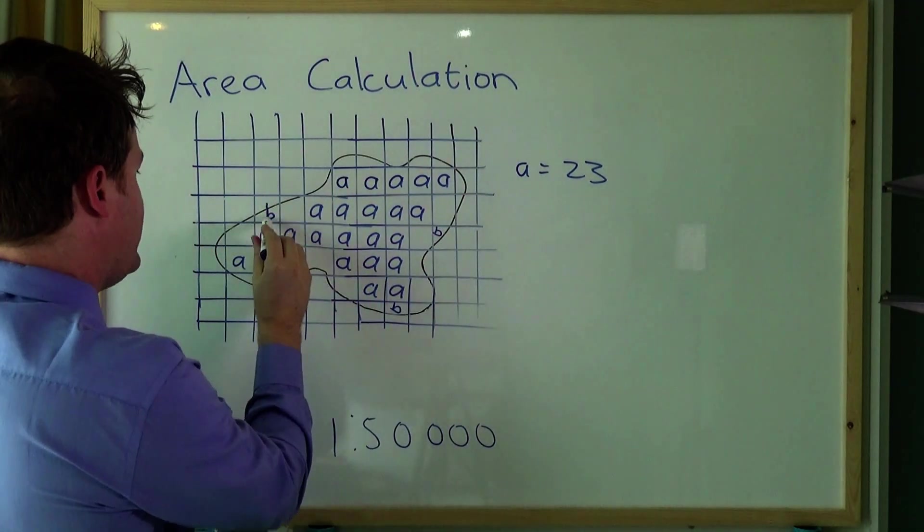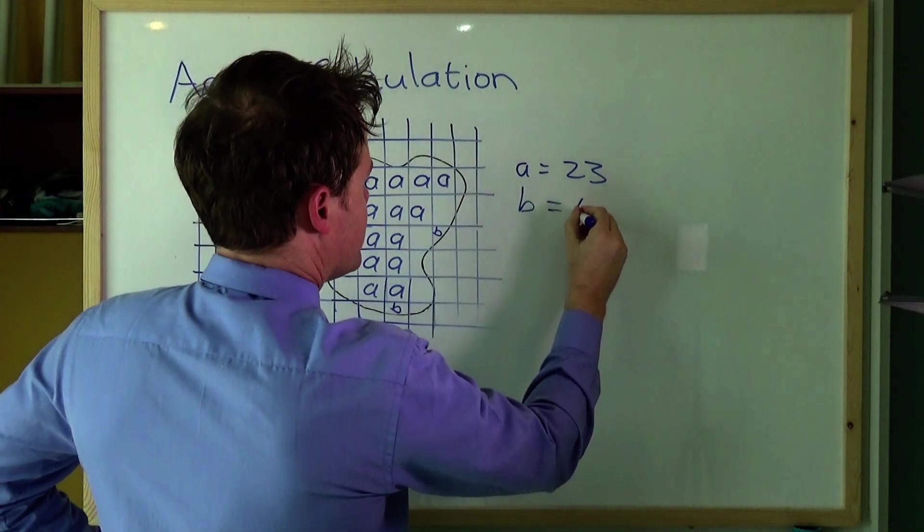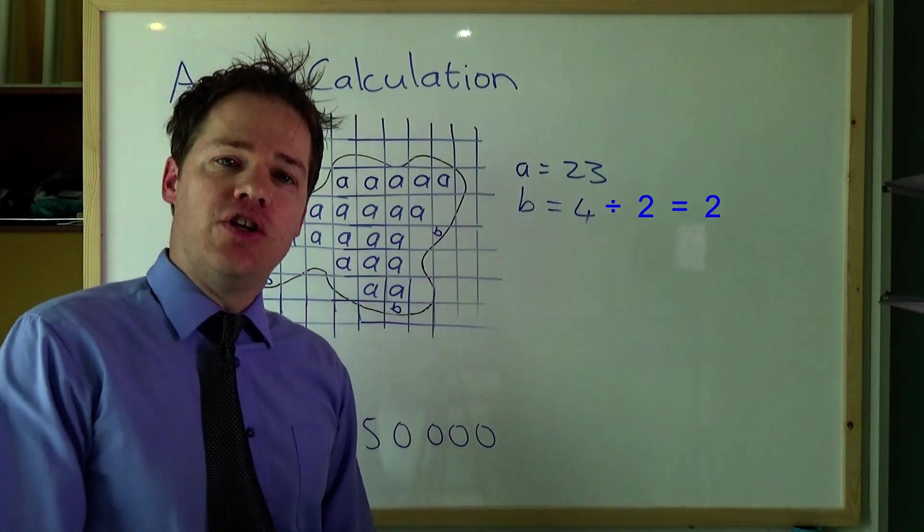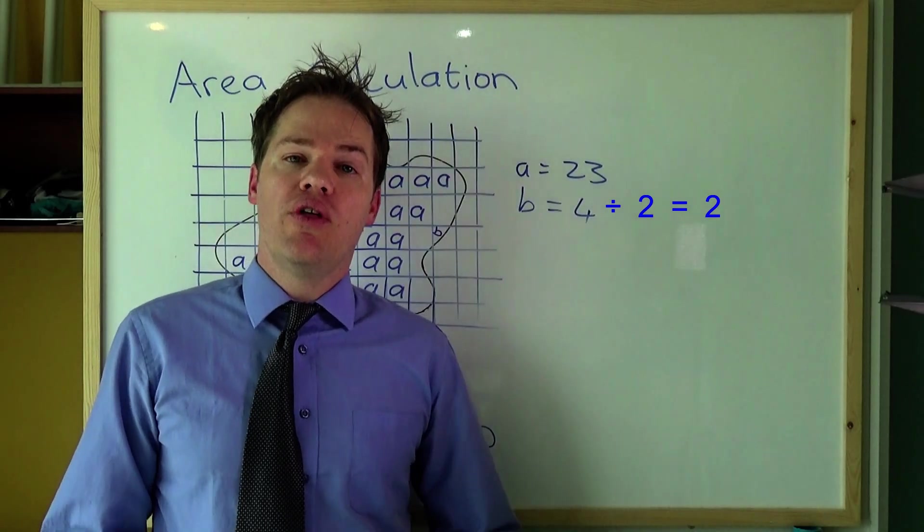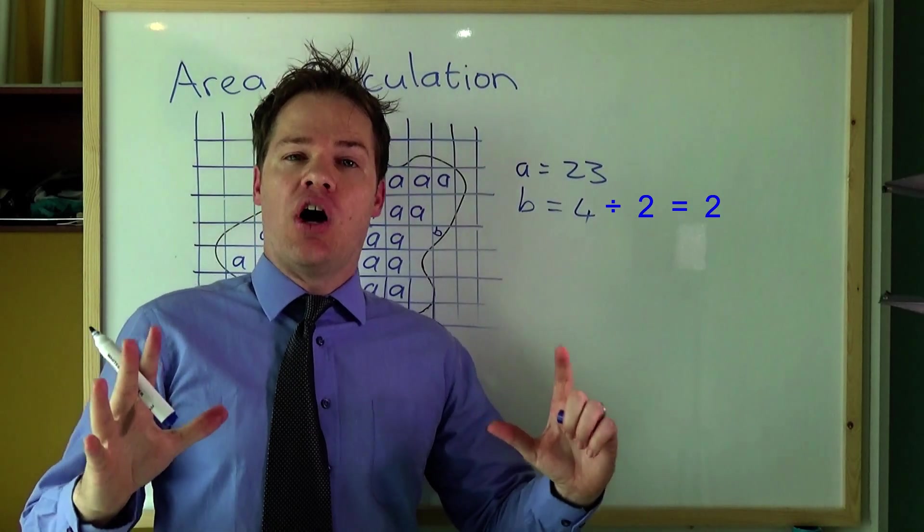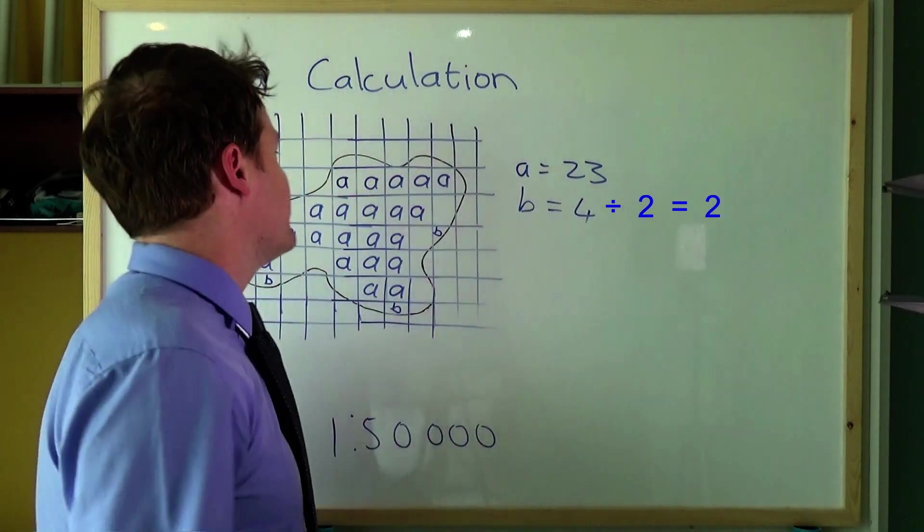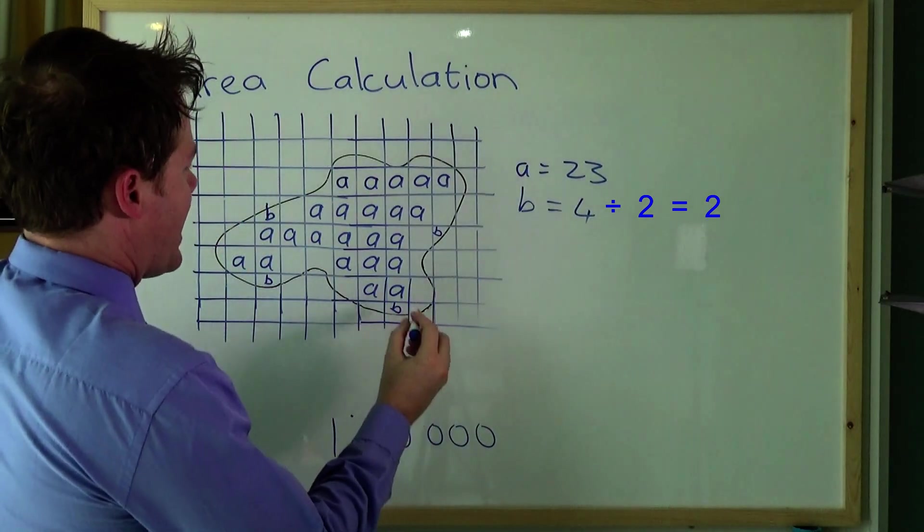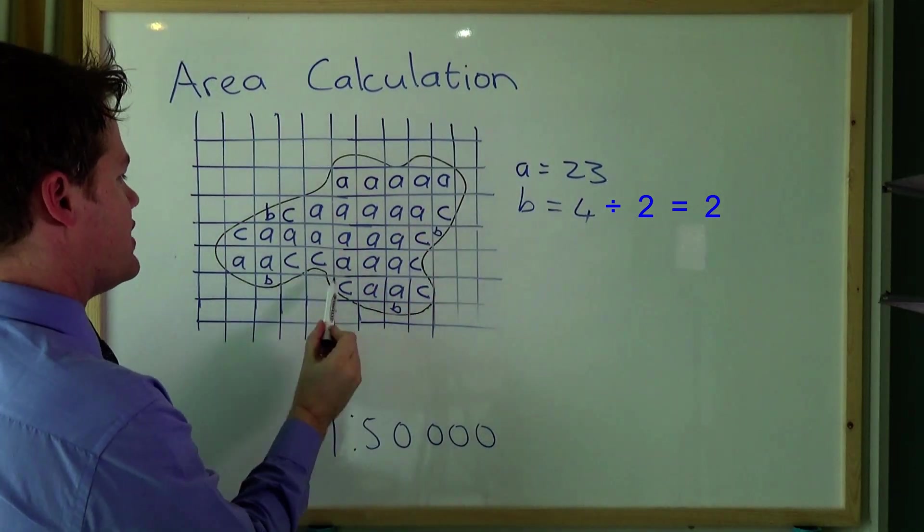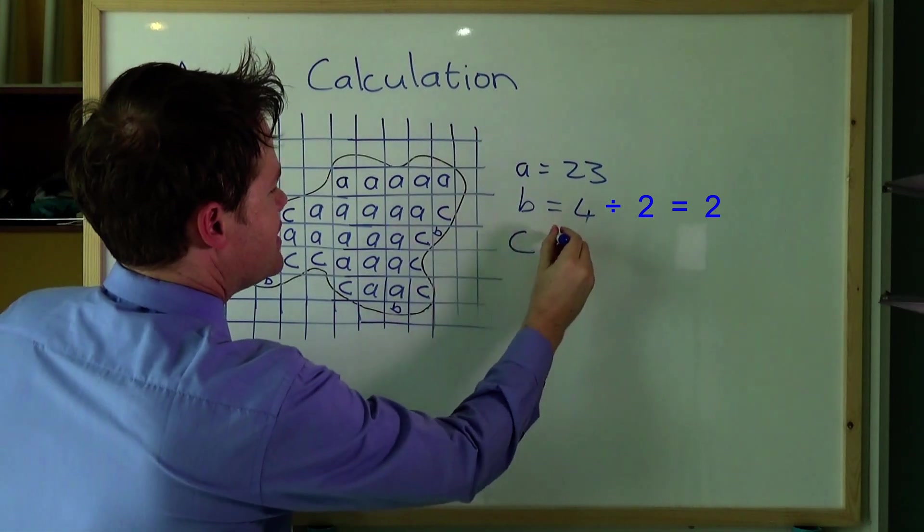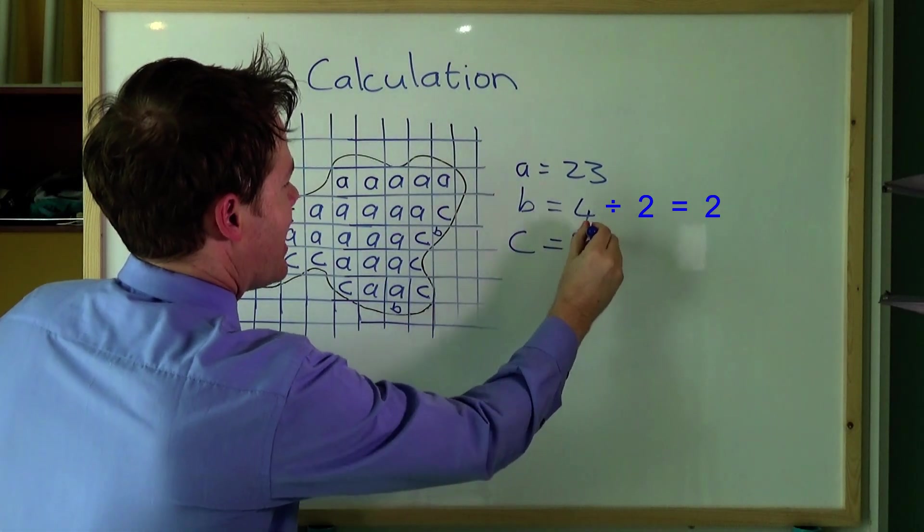So B equals four. What we are going to do next is count all the ones which are bigger than half and add them up. So C equals eight.